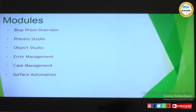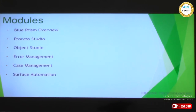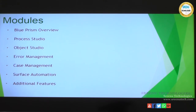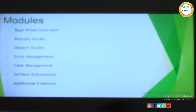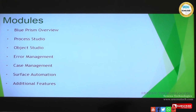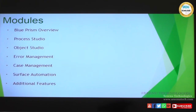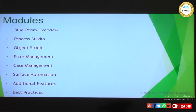We will also see surface automation, which is predominantly used to automate Citrix and remote desktop applications. Then we'll cover additional features like logging, environmental variables, and reporting built within Blue Prism, and how it enhances the user in implementing RPA. We will also see some best practices which are widely used so that you can follow them and get the maximum benefit out of it.